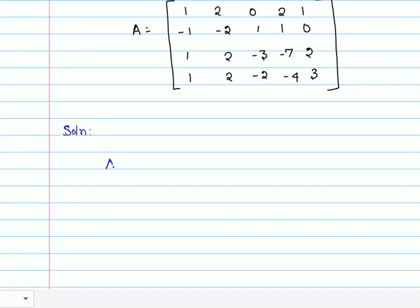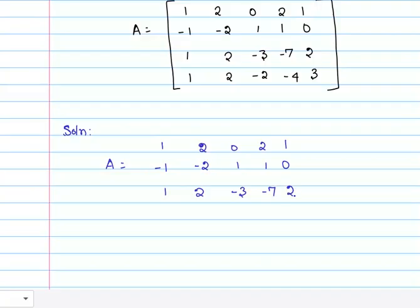The given matrix has first row: 1, 2, 0, 2, 1; second row: -1, -2, 1, 1, 0; third row: 1, 2, -3, -7, 2; and fourth row: 1, 2, -2, -4, 3. So I write the given matrix as this.